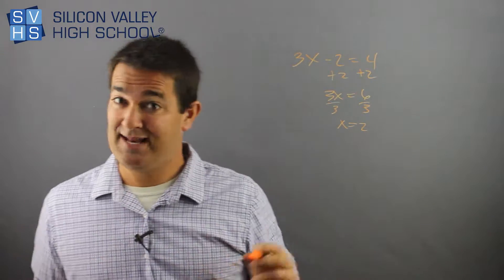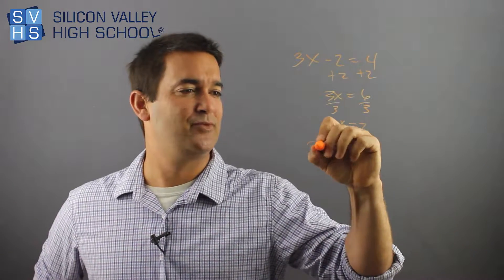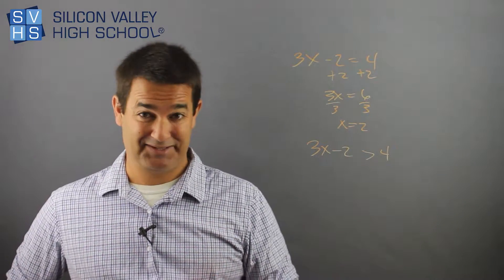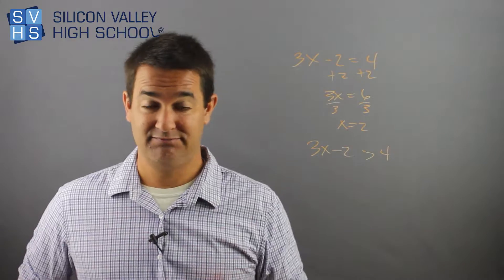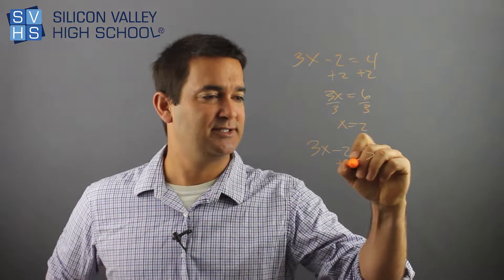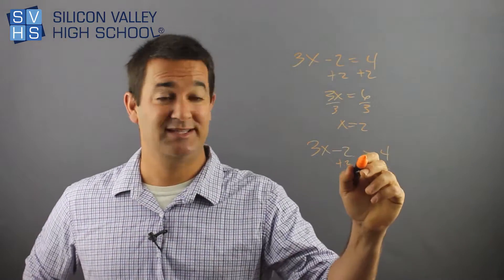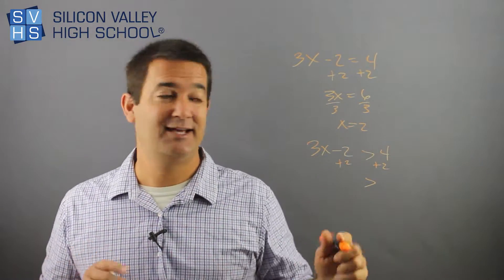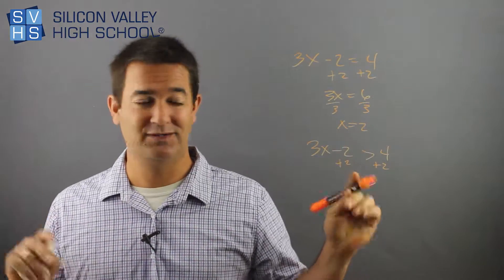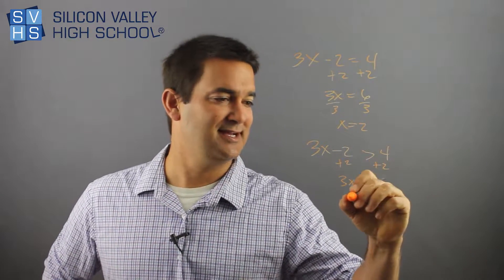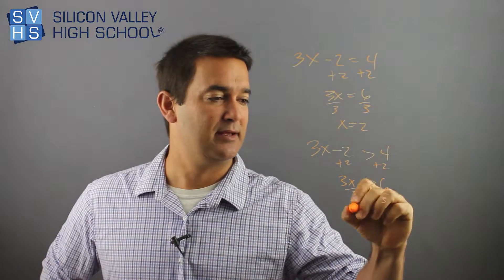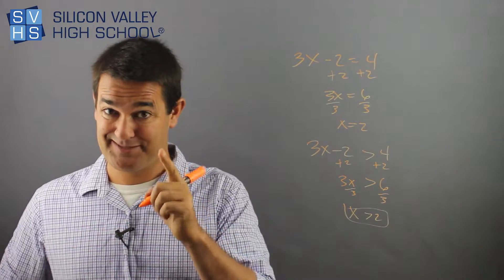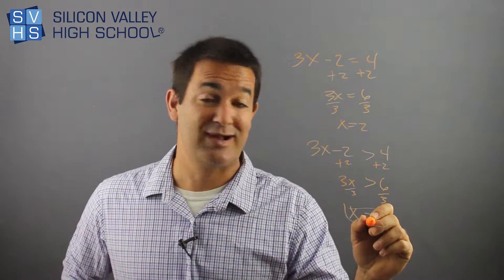Now if the same problem came up but it was an inequality — so if you had 3x minus 2 is greater than 4 — you do it identically. There's no weird difference here. You still do plus 2, plus 2. The difference is this sign just carries on being that sign. Don't mess with it, carry it down. Don't change it to an equals. So you'd have 3x greater than 6, divide both sides by 3 — and I almost made the one mistake I warned you about — x is greater than 2.